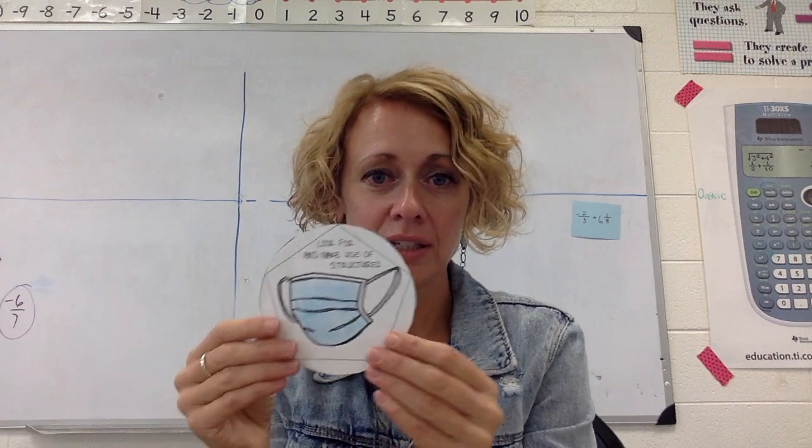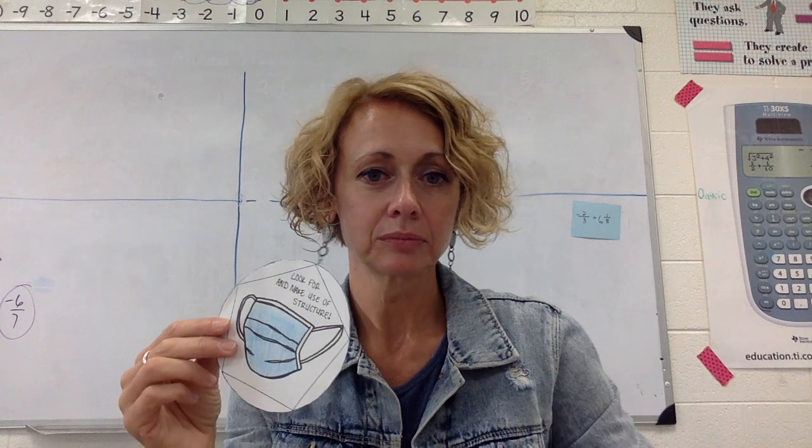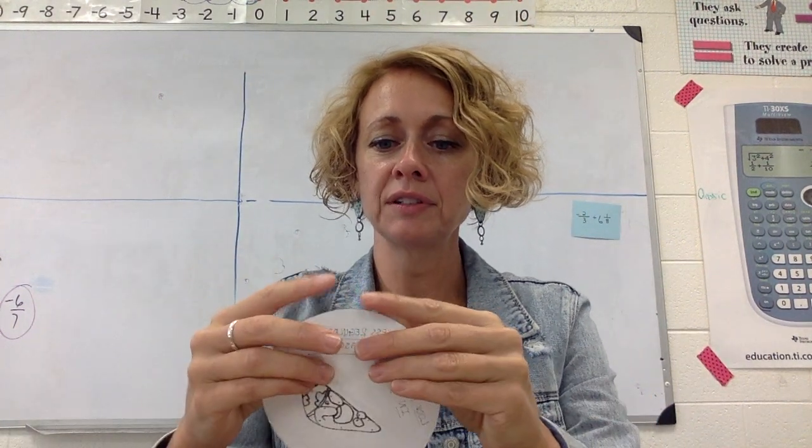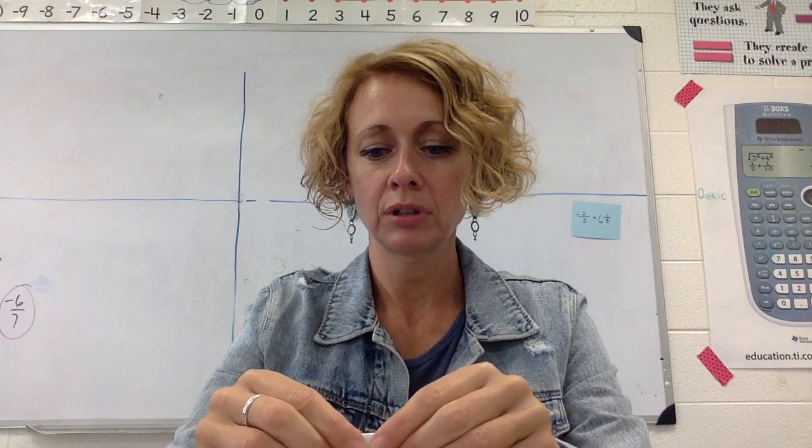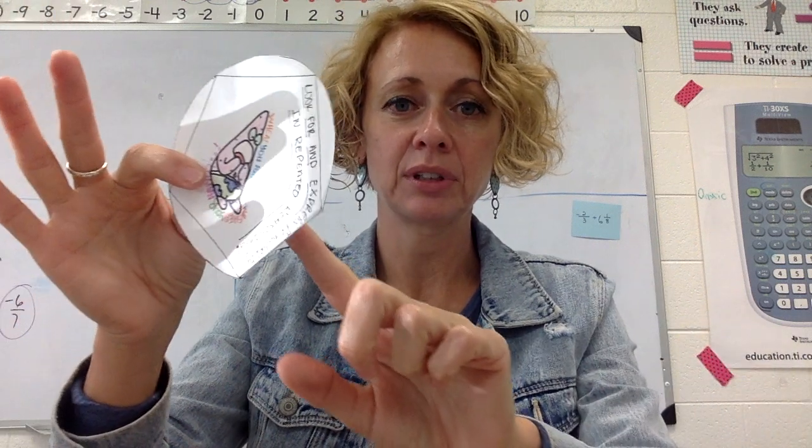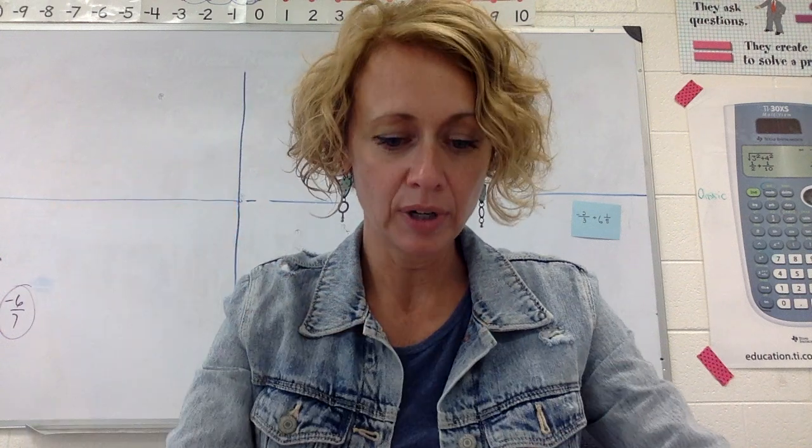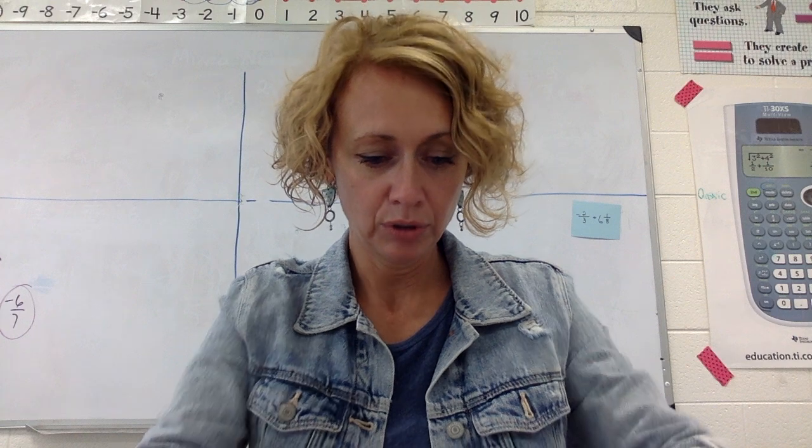So you cut these out and then of course you'll have 12 of these. And then what you'll do is you'll take the flaps and you will crease them on the line just like this. Look at this, see how this has been creased, folded it, and you'll do that all the way around each one of your patterns.